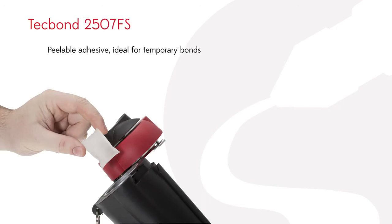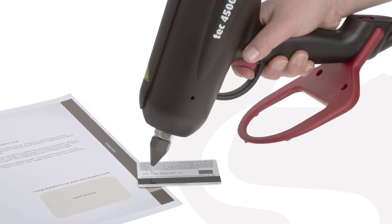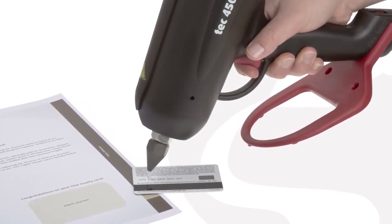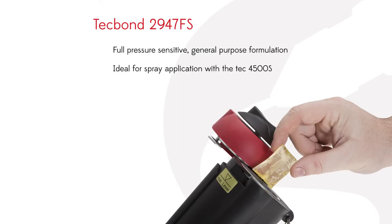The first, TEC BOND 2507FS, is a peelable adhesive that is ideal for making temporary bonds and attaching objects such as credit cards and items for magazine giveaways.